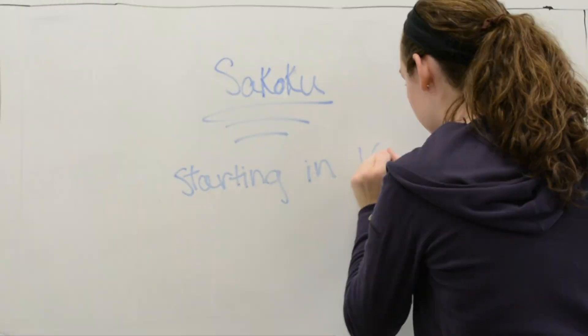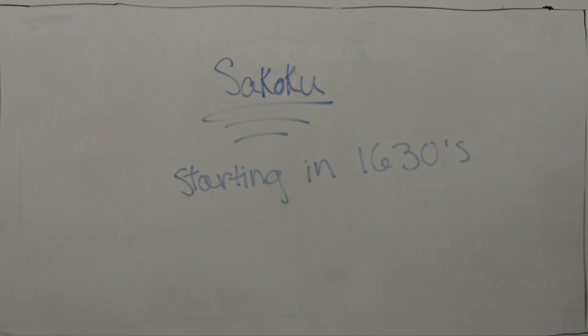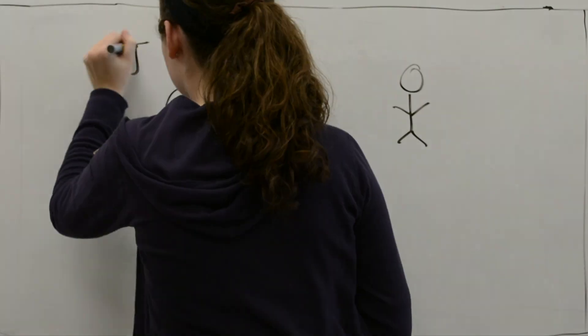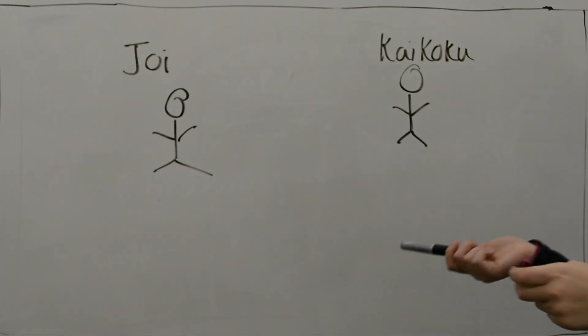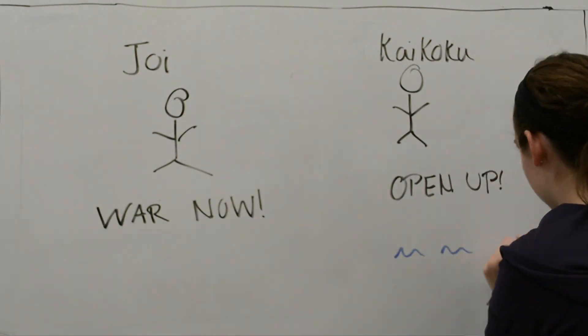Japan was divided over what to do about foreigners wanting to trade: those who believed in expelling the barbarians and going to war, called joi, and those who thought Japan should open up, called kaikoku.